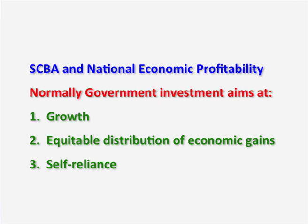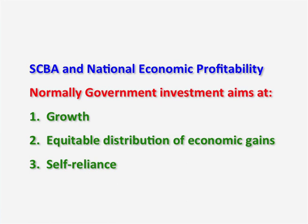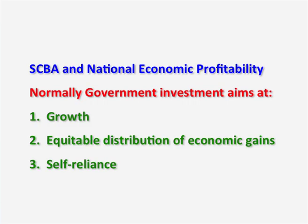SCBA and National Economic Profitability has three aspects. Normally, government investments take place for the purpose of growth — whether income levels, per capita income, purchasing power, or disposable income are growing, and quality of life is growing. Similarly, whether equitable distribution of wealth is taking place: whatever economic gain arises, whether that is distributed equitably among all stakeholders. If it is not equitable, only a few stakeholders are benefited and others are denied benefit, which will cause a problem. Similarly, whether self-reliance: does this project encourage self-reliance or worsen the situation?